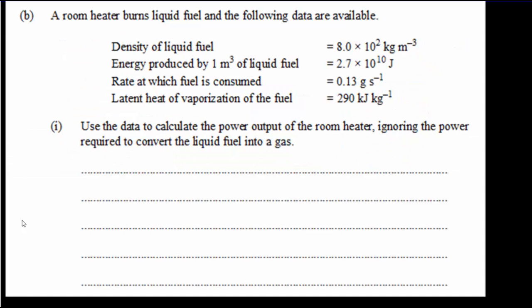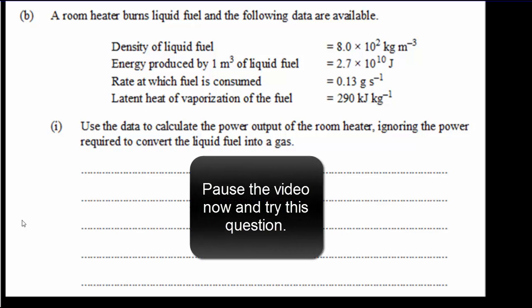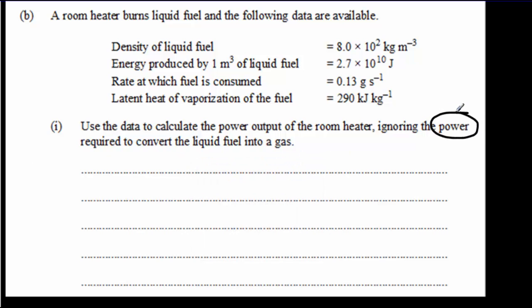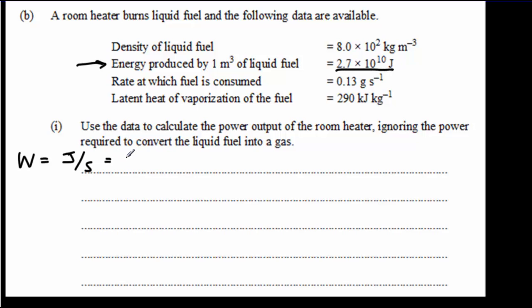Here is the original IB power, energy, and climate change question — one that can be done without having studied the topic if you know dimensional analysis well. We're looking for power produced, with units of watts, which are joules per second. Our energy comes from the fuel, so I'll start with 2.7 times 10 to the 10th joules per meter cubed.